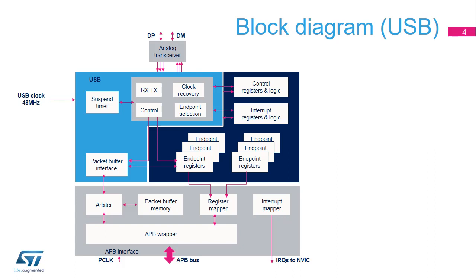The physical layer, or PHY, handles the analog signal levels, including specific level detections, as well as battery charger detection functions. The USB interrupt goes to the Cortex processor to signal various USB events. The AHB peripheral bus, or APB, enables read-write access of the controller. Other key elements are the packet buffer memory and the suspend timer, allowing low power operation.